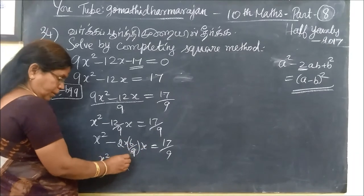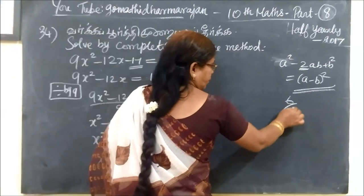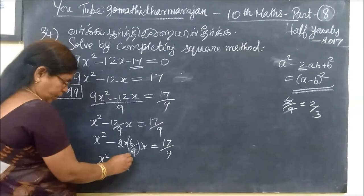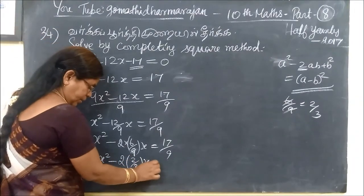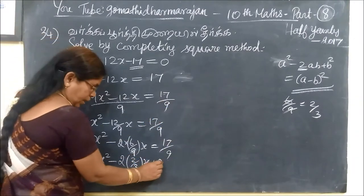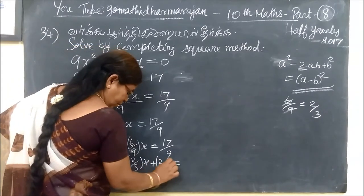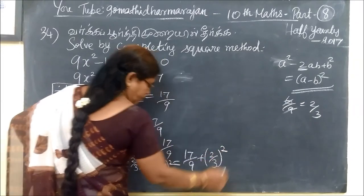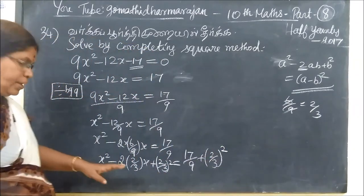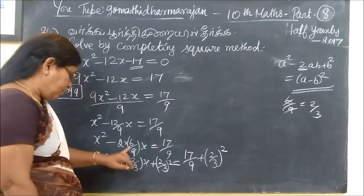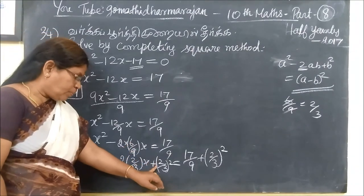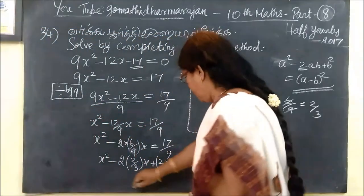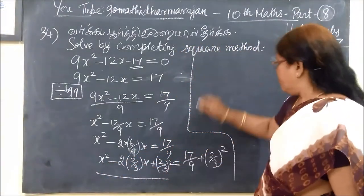So 2a is x, and 2a times b is 2x times 2a, which equals b. When we start working on this, 6 by 9, which simplifies to 2 by 3. So 2 by 3. If we take 2 by 3, I will put 2 here.